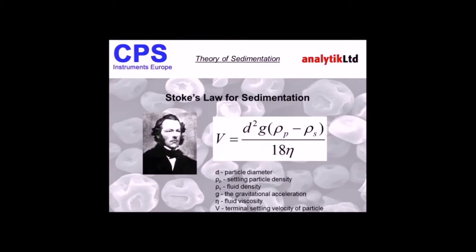What I've got here is Stokes' law, which is used to determine an unknown distribution of spherical particle sizes by measuring the time required for the particles to settle a known distance in a fluid of known viscosity and density. With this Stokes' law, there are various different parameters, and if you know these values accurately, you can actually determine the particle size diameter.